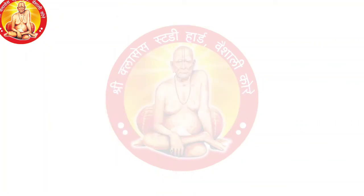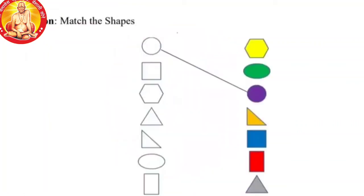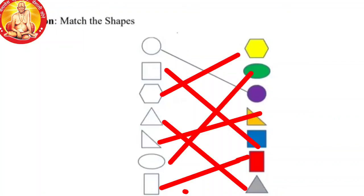Now we will take the next activity — Match the Shapes. See students, there are shapes which are uncolored, and at Section B there are colored shapes. Akar paha and match the pairs of same shapes. Saman akaracha zhojya, aakrutenscha zhojya lava. Let's start.